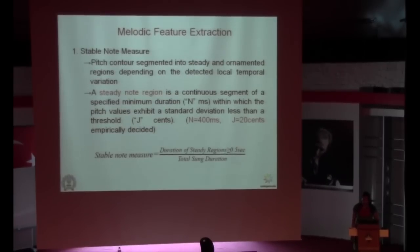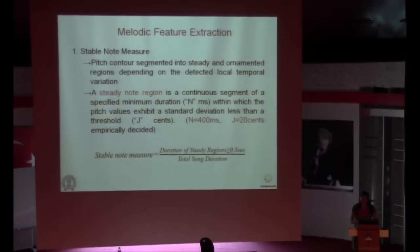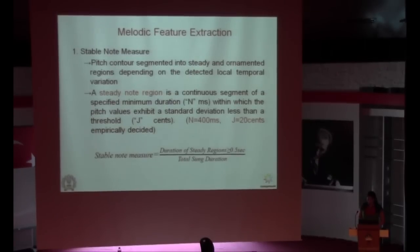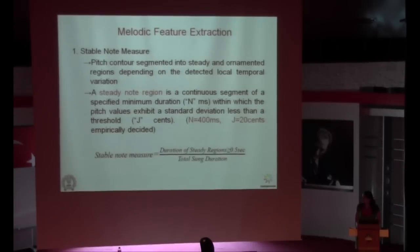For finding the stable note measure, we segment the pitch contour into steady and ornamented regions. A steady note is defined as a continuous segment of specified minimum duration within which the pitch value should exhibit a standard deviation within a specified threshold. We selected these thresholds empirically as 400 ms and 20 cents. For all audio clips, the stable note measure was then calculated as the duration of steady regions greater than 0.5 seconds to total sung duration.